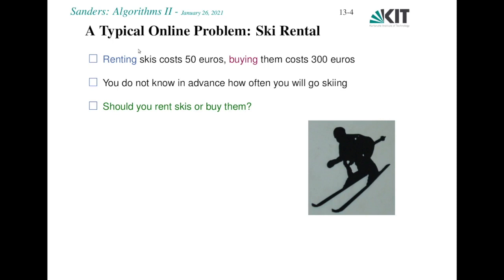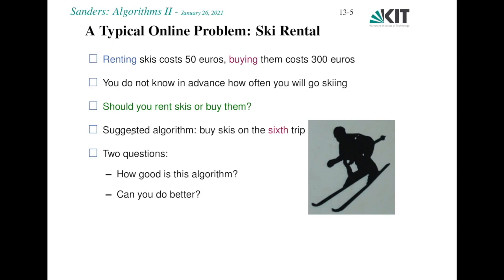Let's look at a concrete example — the ski rental problem. Say renting skis for a day costs 50 euros, but buying them costs 300 euros. Say you just moved to a place where you can go skiing and you do not know in advance how often you will go skiing. So it's a difficult decision: should you rent or buy? I will look at an online algorithm that will actually turn out to be optimal, which does something very simple: it buys skis on the sixth trip. The first five times you rent, then you buy, and then you never have to pay again. How good is this algorithm, and can we do better?